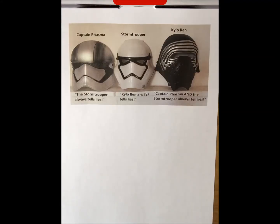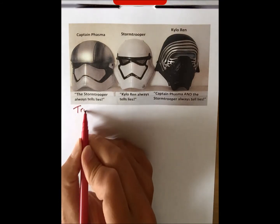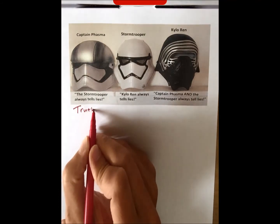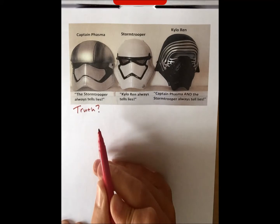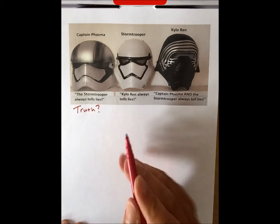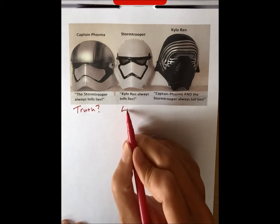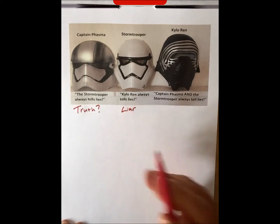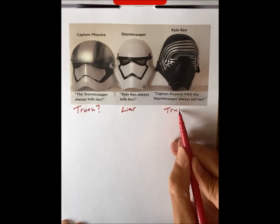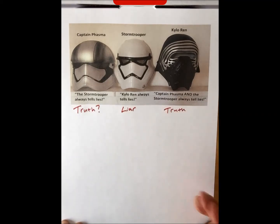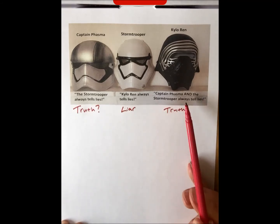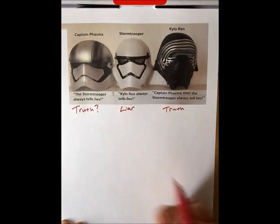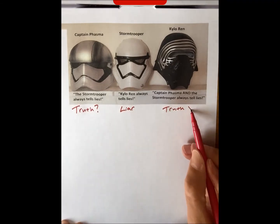The way to tackle this one is to assume someone's telling the truth and see if it works out. So we're going to assume that Captain Phasma is telling the truth. That means the stormtrooper is telling lies — so the stormtrooper is a liar. But the stormtrooper said that Kylo Ren tells lies, and if the stormtrooper is a liar, that means Kylo Ren tells the truth.